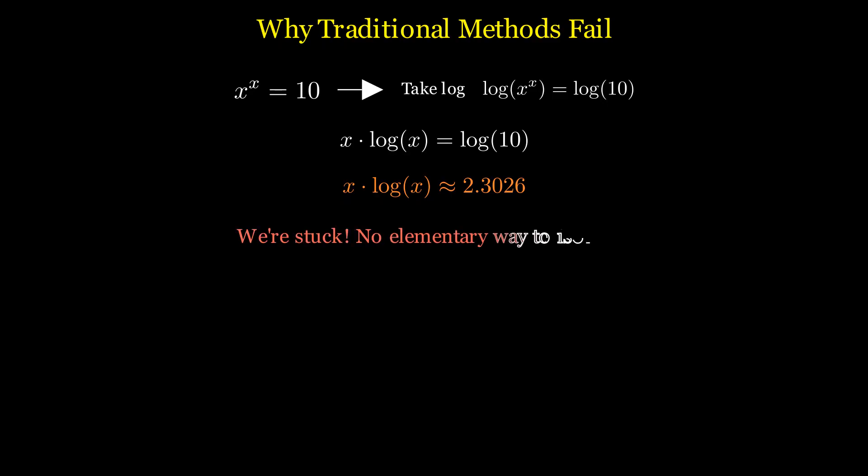Let's see why our usual algebraic tricks don't work here. We might try taking the logarithm of both sides. Using logarithm properties, this becomes x times log of x equals log of 10, which is approximately x times log of x equals 2.3026. But now we're stuck. We have x multiplied by log of x, and there's no elementary way to isolate x from this equation. This is what mathematicians call a transcendental equation, one that can't be solved using basic algebraic operations.